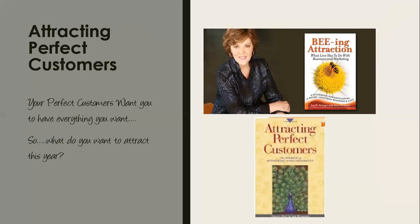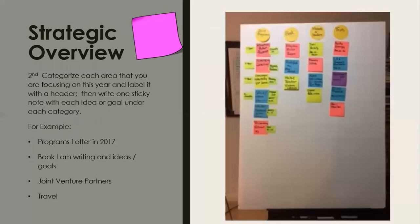Next, I'd like to introduce you to an overview of how I do strategic planning. I start with a display board and sticky notes and categorize each of the main areas I've been thinking about. All of us have lots of things on our minds all day long, so you create a sticky note category and put your ideas underneath each header. My first column is about the programs I offer in 2017.